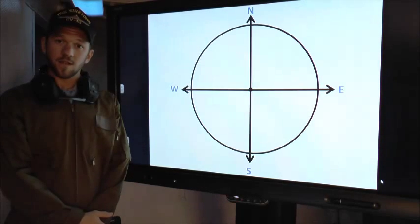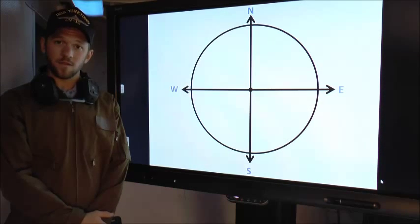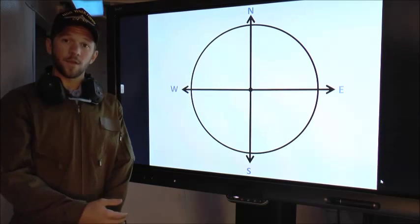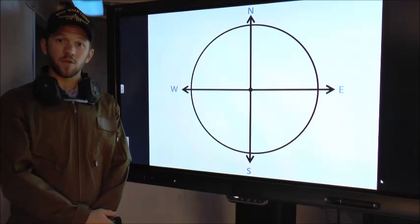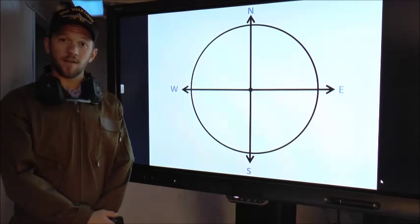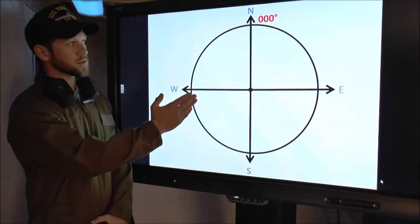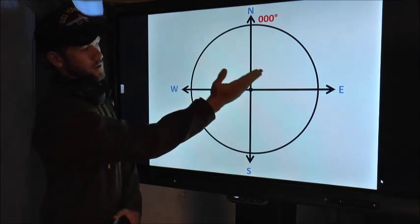Now in navigation it's important to be precise. So when you're reading a heading or communicating a heading, you don't use the cardinal directions, but you use degrees. On a navigational compass, north is zero degrees. If you go down to a horizontal, we have east is 90 degrees.